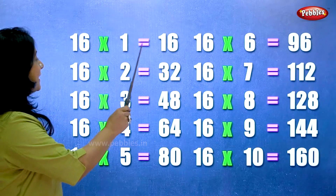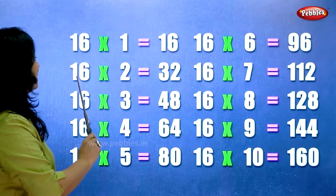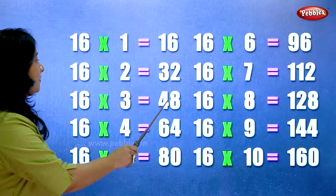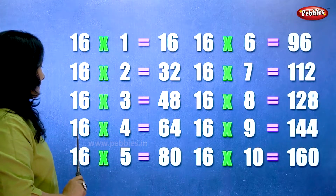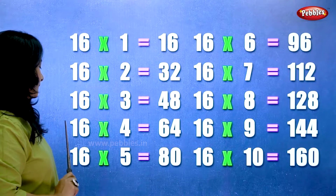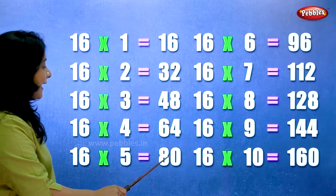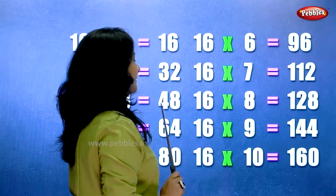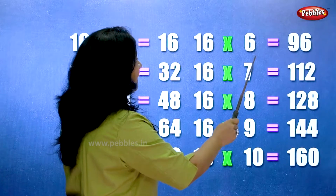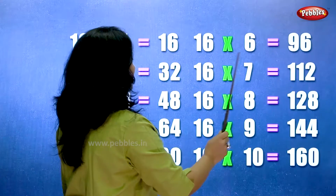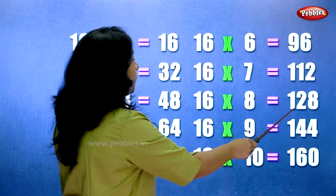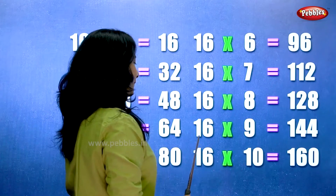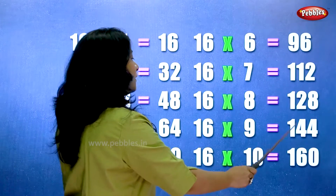16 ones are 16. 16 twos are 32. 16 threes are 48. 16 fours are 64. 16 fives are 80. 16 sixes are 96. 16 sevens are 112. 16 eights are 128. 16 nines are 144. 16 tens are 160.